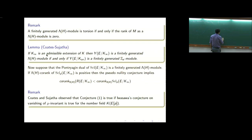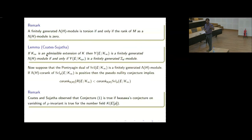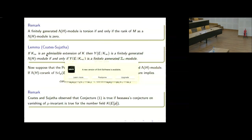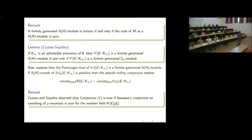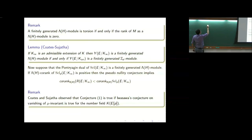There is a lemma due to Coates and Sujata which says the dual fine Selmer is a finitely generated Z_P module over the cyclotomic extension if and only if it is a finitely generated Z_P·H module over K_∞. This is a control theorem argument: you have R_E over K_cyc and R_E over K_∞, with a restriction map. One can show the kernel and cokernel are finitely generated Z_P modules, and then a topological Nakayama lemma shows it is finitely generated Λ(H).